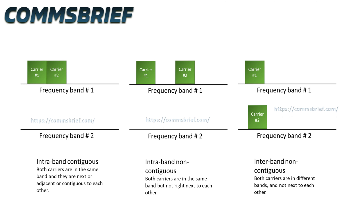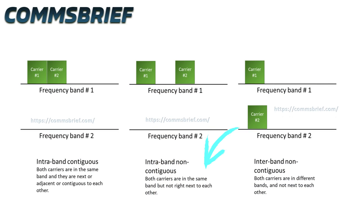4G LTE networks use a range of different frequency bands. Intraband contiguous carrier aggregation is when both carriers are adjacent to each other — right next to each other, or contiguous. Intraband non-contiguous carrier aggregation means you're using the same frequency band but the channels are not right next to each other — they are separated. The third type, interband non-contiguous, uses two separate frequency bands, so the carriers are not contiguous.